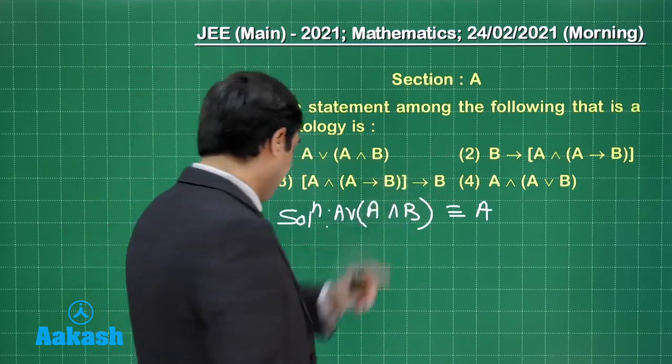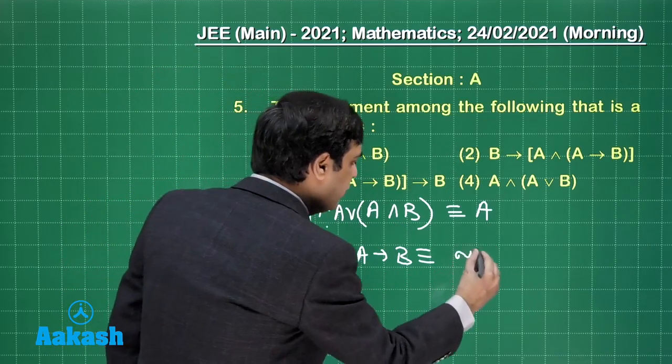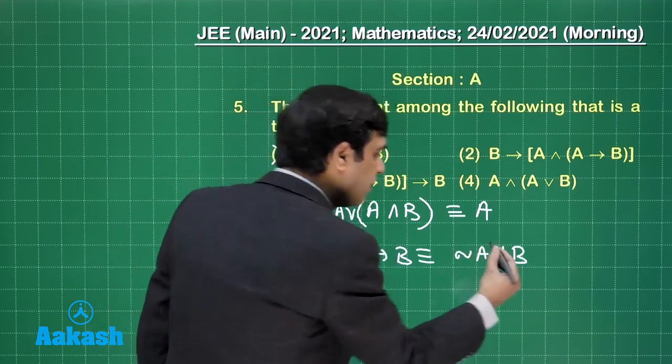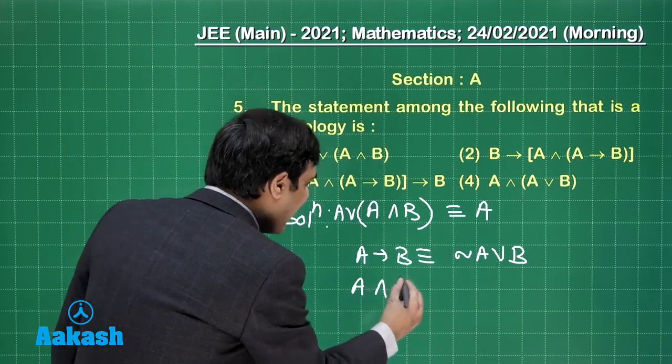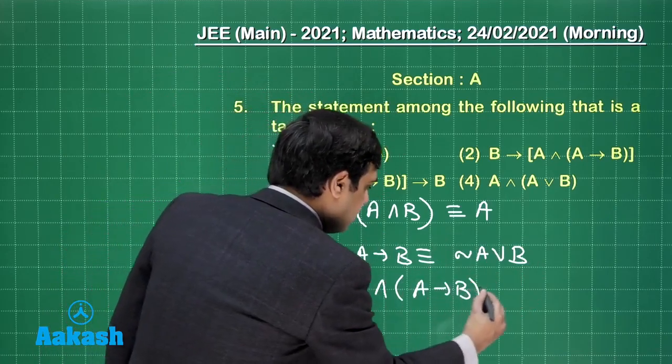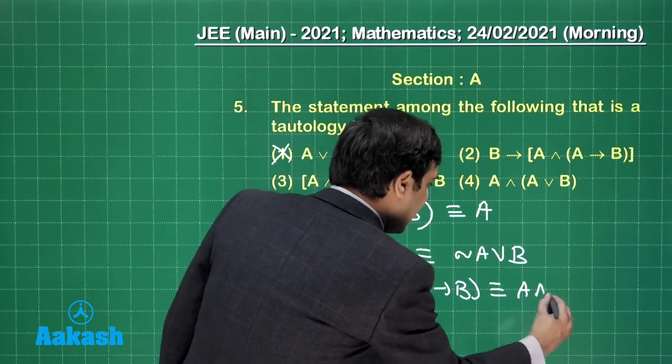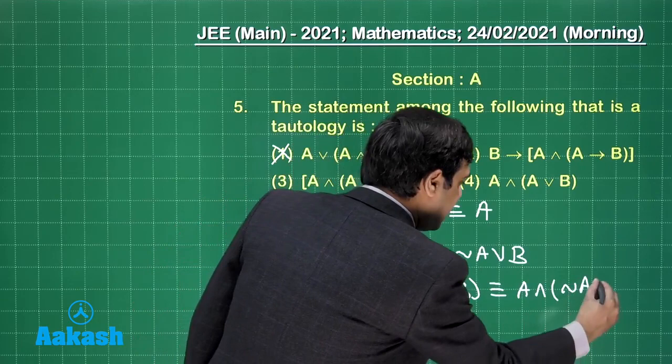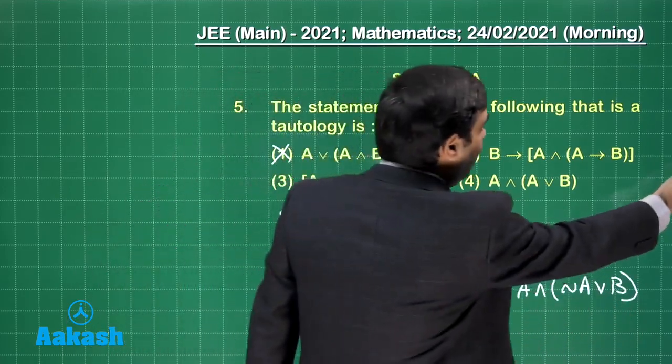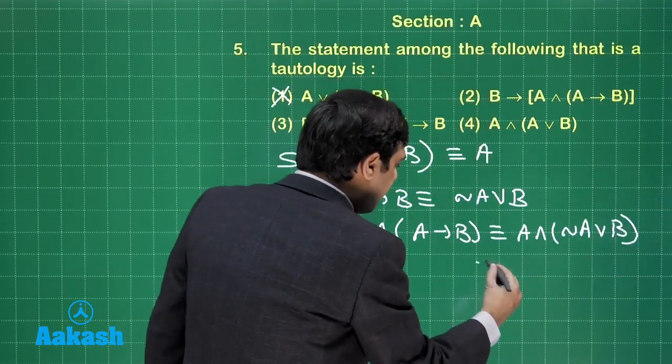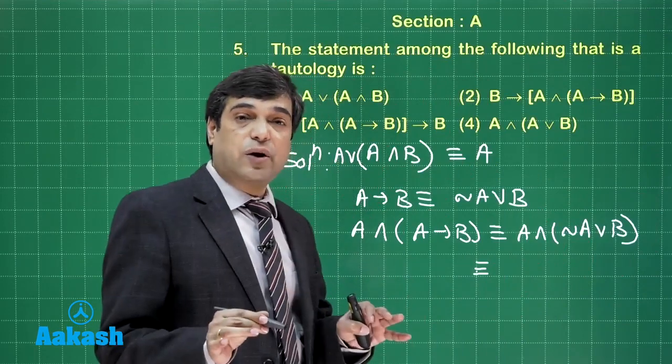Moving forward in the similar manner if you talk about if A then B. This is equivalent to negation A or B. Now when you take AND of it with A, that means this is equivalent to A and negation A or B. Now when you apply distribution law here you observe this is equivalent to A and not A. A and not A, that means always low.